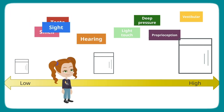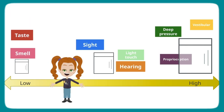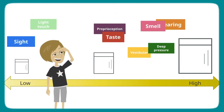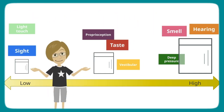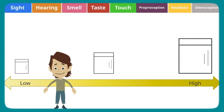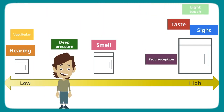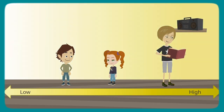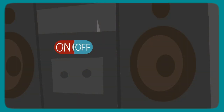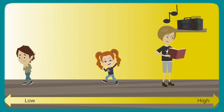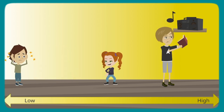Your child's sensory thresholds or cup sizes can be different for different sensations — this is common. Sensations don't get bigger or smaller; each person's thresholds or cups are just different sizes and fill up at different rates. This means that your child may notice or react to the same sensations differently from others.